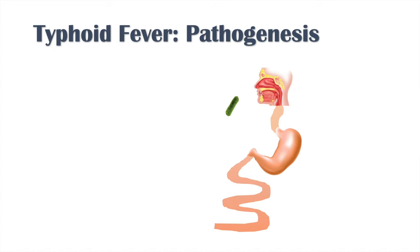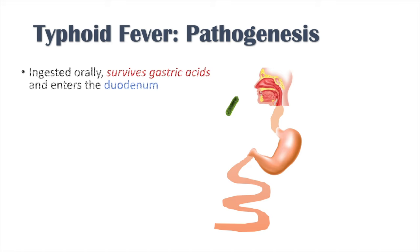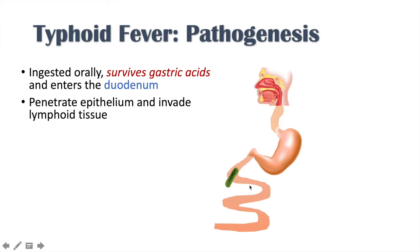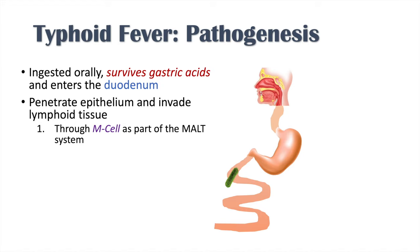Salmonella typhi and Salmonella paratyphi are ingested orally and survive gastric acids, then enter into the duodenum, which is the first part of the small intestine. They penetrate through the intestinal epithelium and invade lymphoid tissue by two mechanisms: one is through an M cell, which is part of the mucosal-associated lymphoid tissue (MALT) system; the second is through direct penetration into an epithelial cell via CFTR, the cystic fibrosis transmembrane conductance regulator, which is a chloride ion channel.